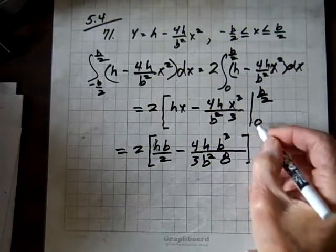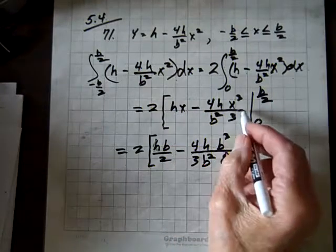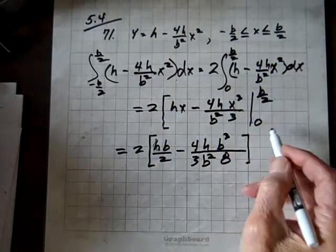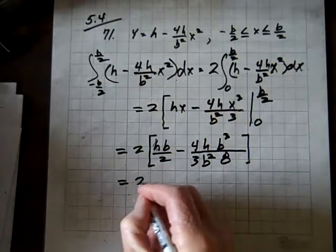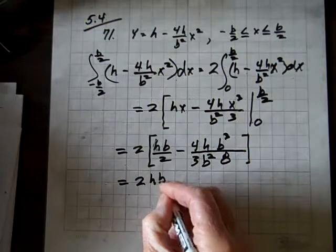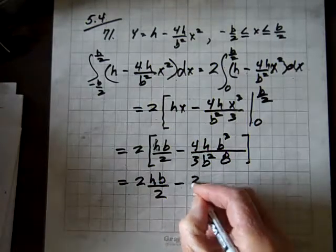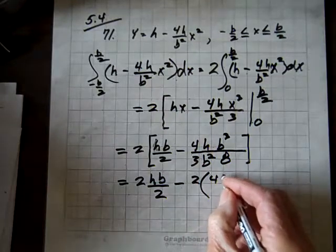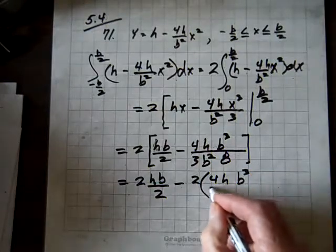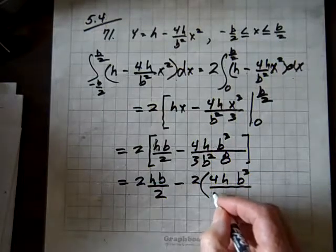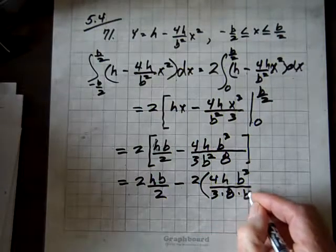And now, when we evaluate for 0, both these terms will go to 0, so we're done. We just have to simplify, so we get 2 times hb, h is the height, b is the base, over 2, minus 2 times 4h b cubed, over 3 times b squared.